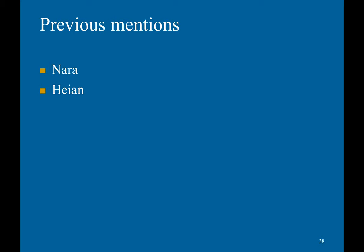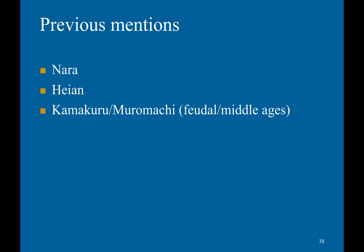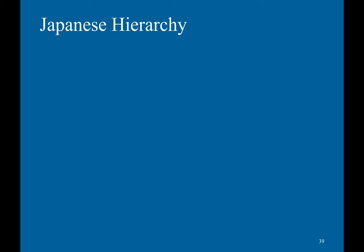Now, moving on to Japan — if you remember previous discussions about Nara, Heian, Kamakura, and Muromachi — today we're going to talk about the Tokugawa Shogunate. At the top was the Shogun, although the Shogun really had the power and the Emperor was just a figurehead. Below them were the daimyo, or local lords.